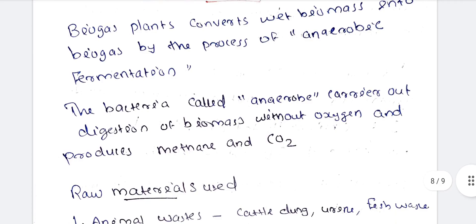The bacteria called anaerobic carry out digestion of biomass without oxygen, and the products are methane and CO2. We use anaerobic bacteria including acetogens and methanogens bacteria. Acetic acid is produced first, then methane is produced. The major co-production is carbon dioxide.